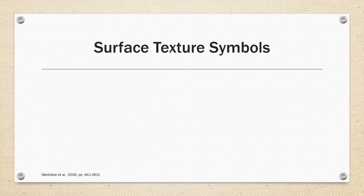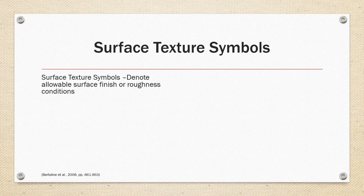Surface texture symbols. The last subject covered in this lecture are what the text calls surface texture symbols, but are commonly called surface roughness in the manufacturing industry. Surface texture symbols called finish marks denote allowable surface finish or roughness conditions.